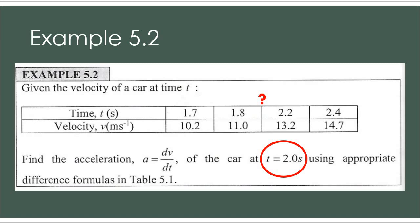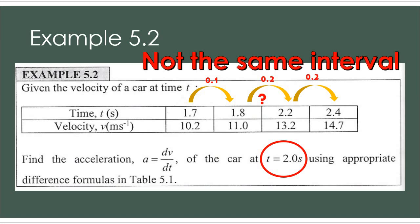So we check first our interval. If we refer back to this table, we can see that 1.7 to 1.8 is 0.1, 1.8 to 2.2 is 0.4, and from 2.2 to 2.4 is 0.2. We do not have the same interval, so how are we going to solve this problem?